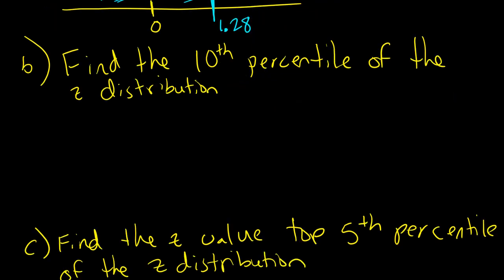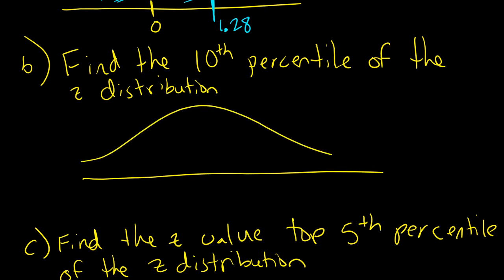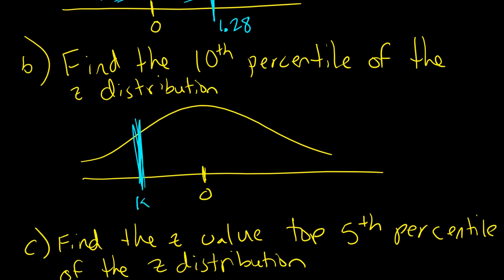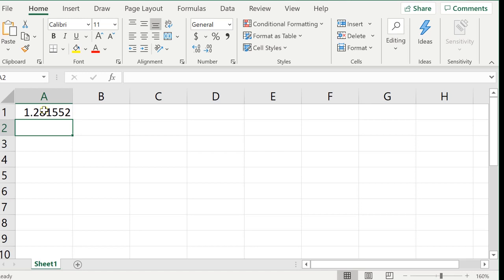Moving on: find the 10th percentile of the z distribution. Here's my z distribution once again, centered on 0. The 10th percentile is going to be somewhere over to the left, because it's less than half — this is a symmetric distribution centered on 0. So 10% is somewhere down here, meaning my answer is going to be negative.